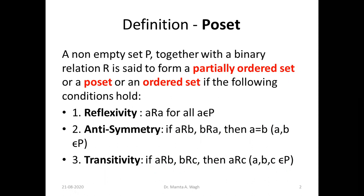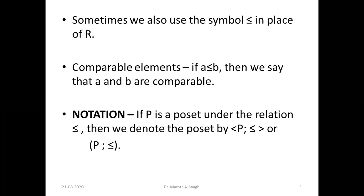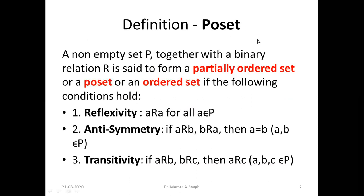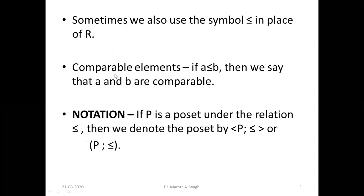If the relation satisfies these three properties, then we say that the relation is a partial order relation, and the set on which the relation is defined is called a partially ordered set, a poset, or an ordered set — they are different names for the same thing. Sometimes we also use the symbol ≤ in place of R to denote this relation.